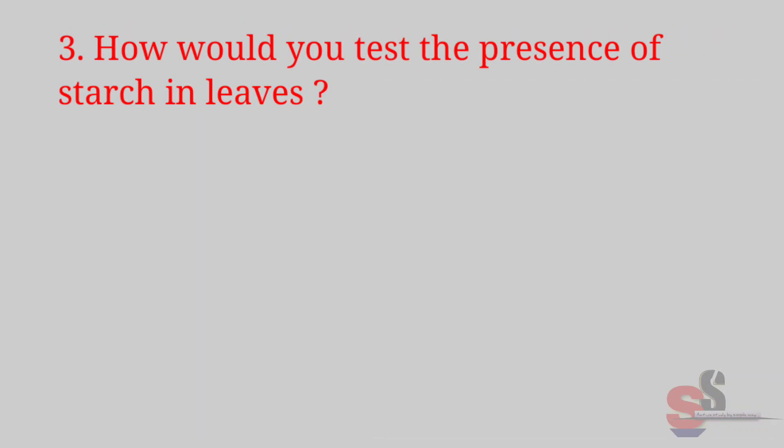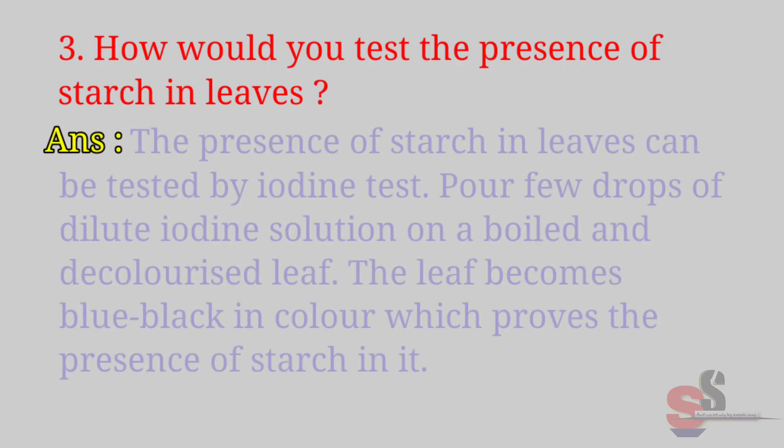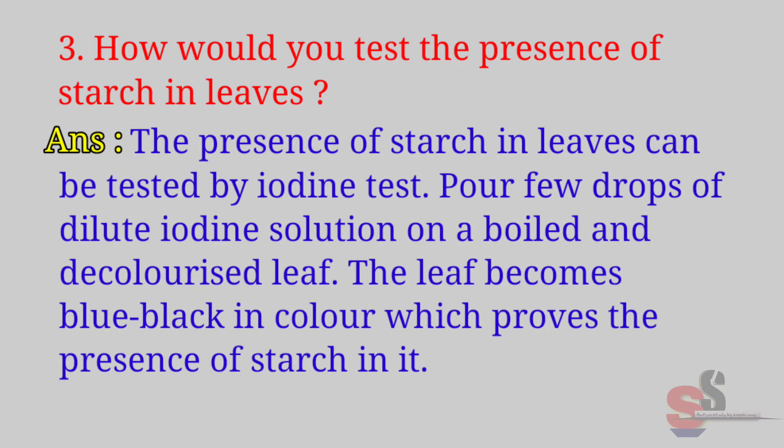Question number 3: How would you test the presence of starch in leaves? Answer: The presence of starch in leaves can be tested by iodine test. Put a few drops of dilute iodine solution on a boiled and decolorized leaf. The leaf becomes blue-black in color, which proves the presence of starch in it.